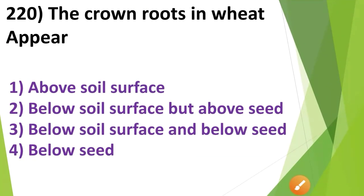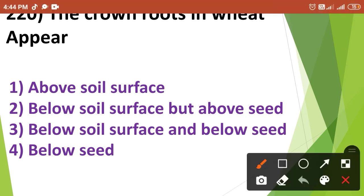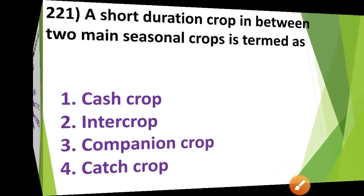The crown roots in wheat appear: 1. Above soil surface, 2. Below soil surface but above seed, 3. Below soil surface and below seed, 4. Below seed. The correct answer is Option No. 2 — below soil surface but above seed.